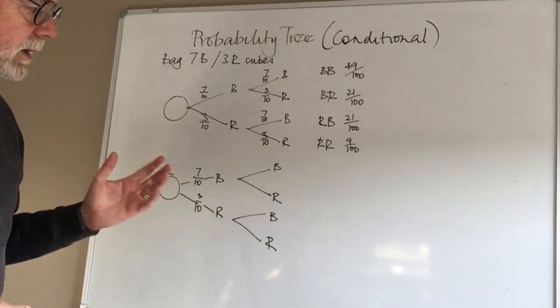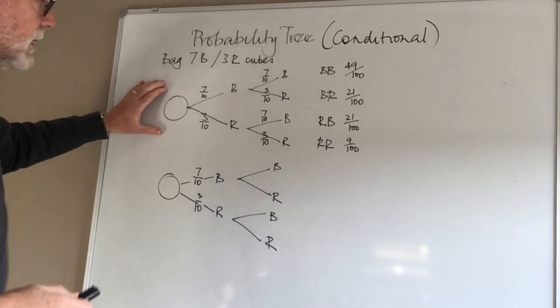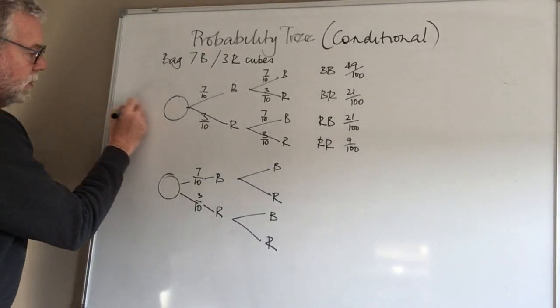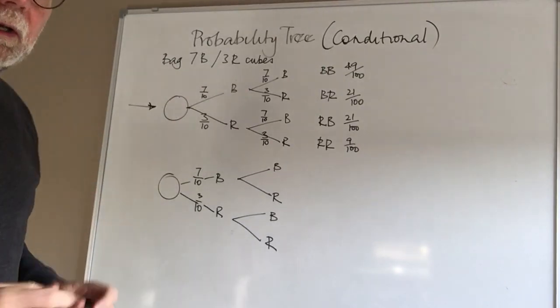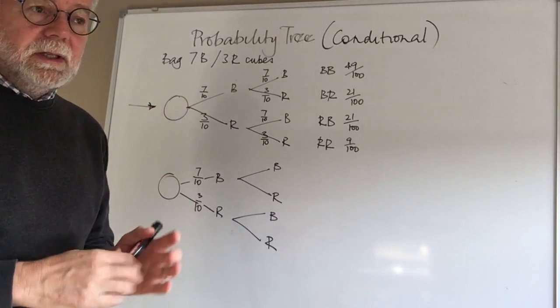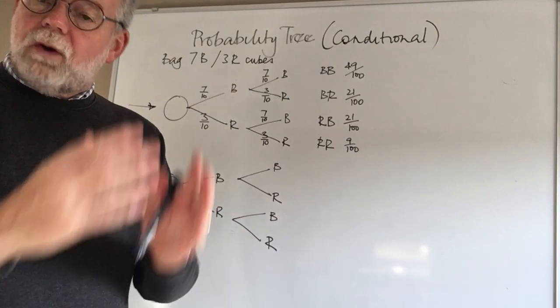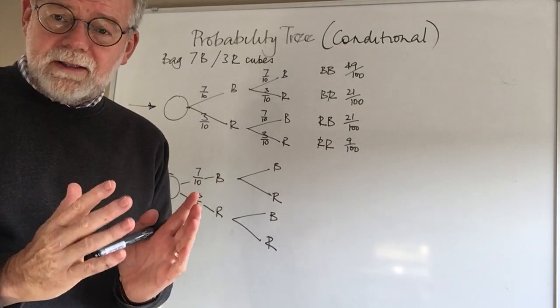So normally in a standard sort of probability question, and this would be our standard question, it would be a case of saying I take out a cube and I put it back in the bag. So in other words, for my second event, I've got exactly the same number of cubes in the bag that I started with.